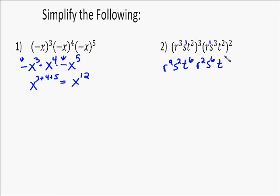And then in the next one you've got to multiply each one by two. So r to the second, s to the sixth, t to the fourth.